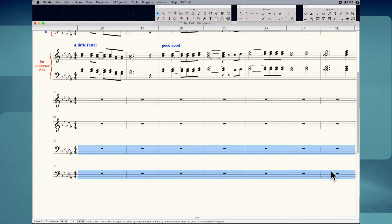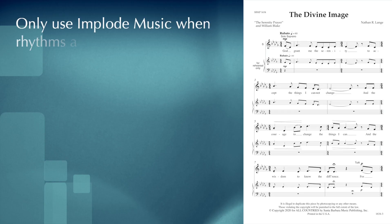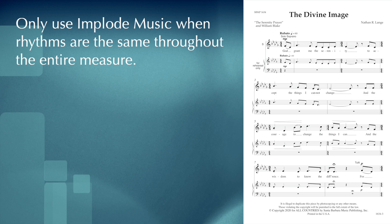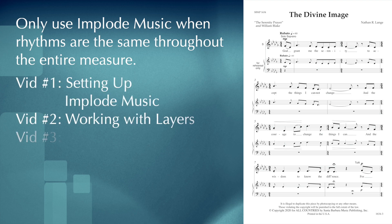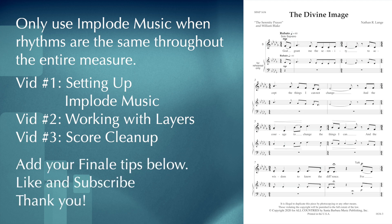This section of the piano reduction is looking pretty good. The Implode Music feature is very powerful, but you don't want to implode music in a particular measure if even one rhythm is different — nine times out of ten, you're going to end up spending extra time fixing whatever Finale comes up with. In this video, I showed you how to set up scratch staves and use Implode Music to combine parts that are in rhythmic unison. In the next video, I'll show you how to combine parts when the rhythms are different. In the video after that, I'll talk about cleaning up your piano reduction once you've added all your pitches. If you have any Finale tips of your own, please comment below. I've been using Finale for over 20 years, but there's always more to learn. Give this video a thumbs up if you got something out of it, and please hit that subscribe button.